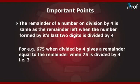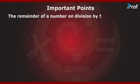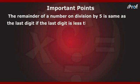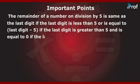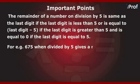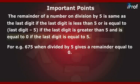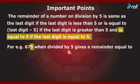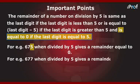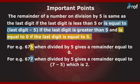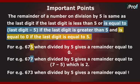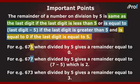The last two digits in that example is 75. The remainder of a number on division by 5 is the same as the last digit if the last digit is less than 5; it equals the last digit minus 5 if the last digit is greater than 5; and it equals 0 if the last digit is 5. For example, 675 ÷ 5 gives remainder 0 (last digit is 5). When 677 is divided by 5, the remainder is 2 (last digit 7 minus 5). When 673 is divided by 5, the remainder is 3 (same as last digit, since 3 is less than 5).